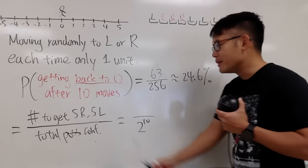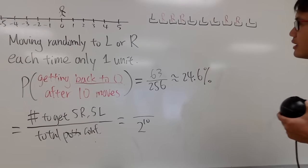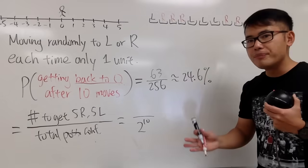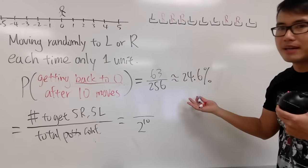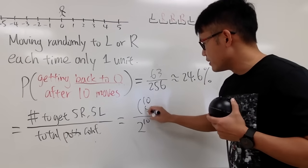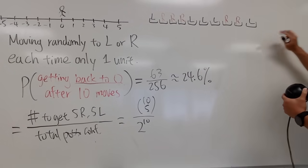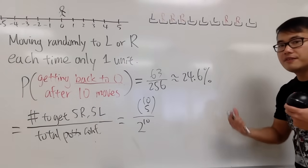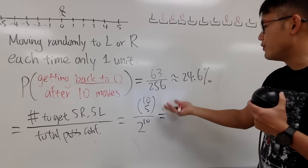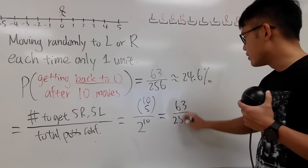To get five R and five L, I just have to choose 5 of the 10 moves to be toward the right — it's symmetrical so it doesn't matter which direction we pick first. So the numerator is C(10, 5) — ten choose five. Once I pick five spots to be moving right, the other five are automatically toward the left. Using a calculator, this gives us 63 over 256.